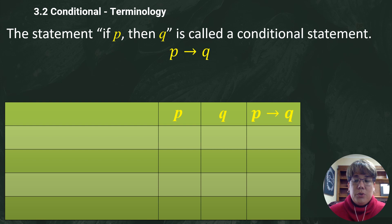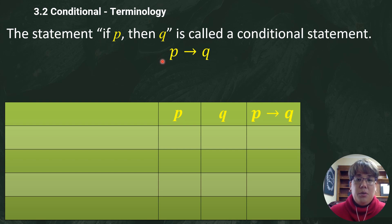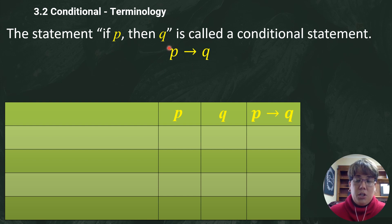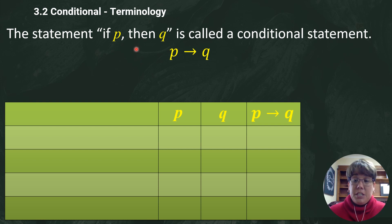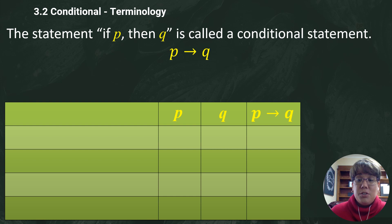Now we're going to introduce what is called the conditional statement. The statement 'if p then q' is called a conditional statement. We write it as p with an arrow towards q: p → q means 'if p then q.' This is probably one of the most used statements in programming, spreadsheets, and different things like that — I use this a ton.